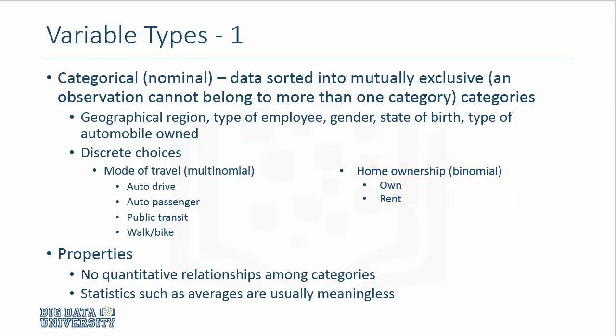Consider travel choices. You can go to work by driving, or someone drives you as a passenger. You can take public transit, or you can walk or bike. In this particular case, you have four choices—more than two—so we call it multinomial. Both binomial and multinomial variables are part of categorical variables. You cannot have any quantitative relationships among categories, and for these types of variables, averages are usually meaningless. If you have a mode of travel with four categories, an average category would mean absolutely nothing of use.